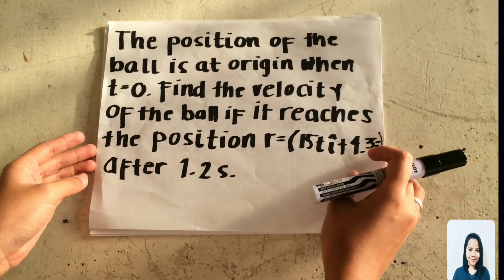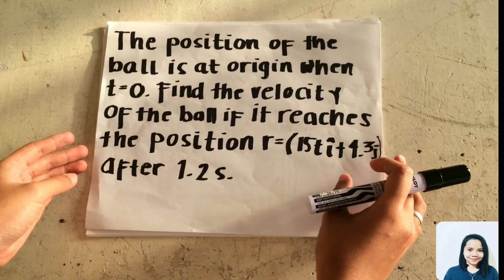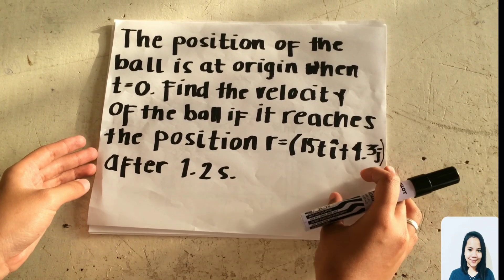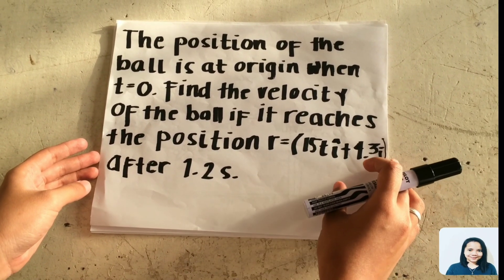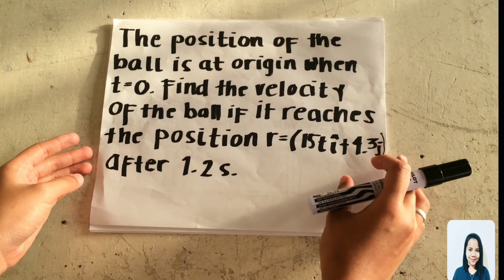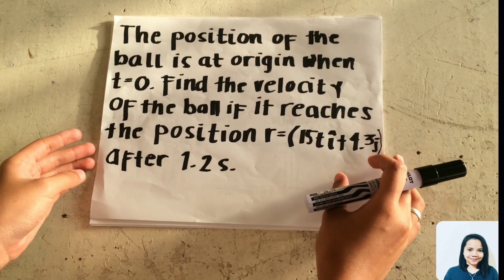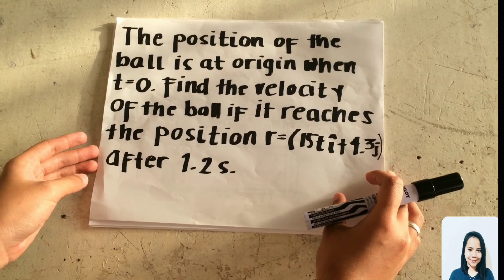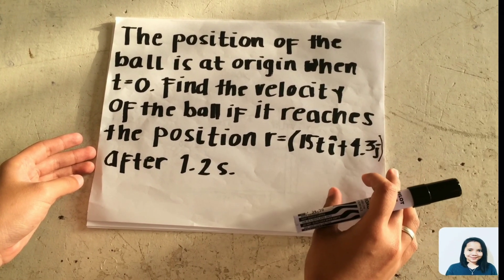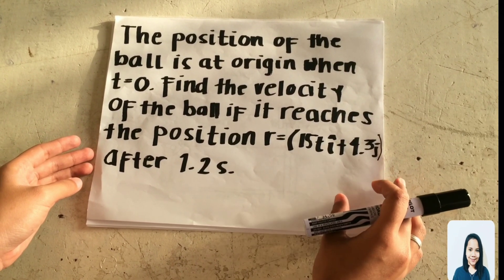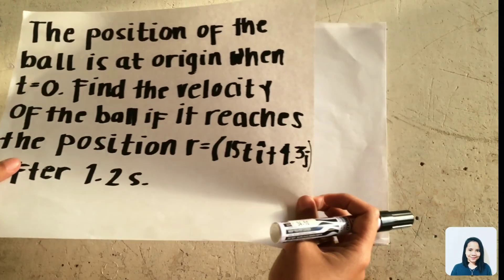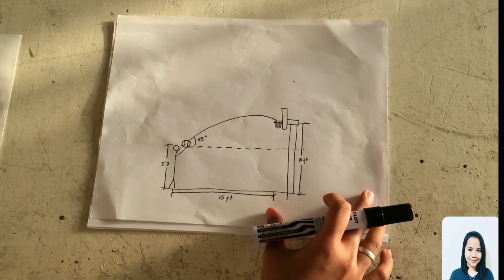Ang problem natin ay ito. The position of the ball is at the origin when T is equal to 0. Find the velocity of the ball if it reaches the position R equals 15T i plus 4.3 j after 1.2 seconds.